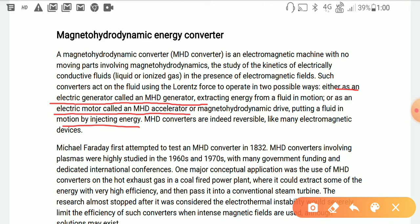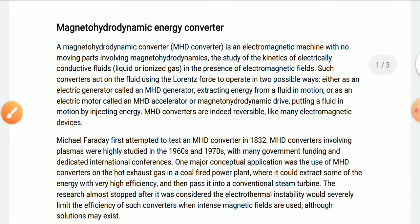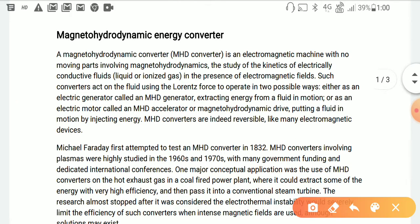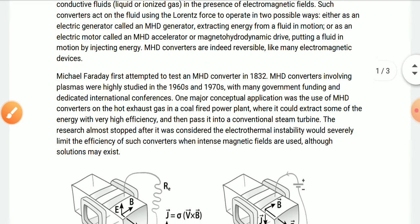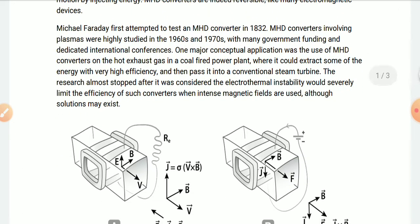MHD converters are indeed reversible, like many electromagnetic devices. Michael Faraday first attempted to test an MHD converter in 1832. One major conceptual application was to use MHD converters on the hot exhaust gas in a coal-fired power plant, where it could extract some of the energy with very high efficiency and then pass it into a conventional steam turbine.